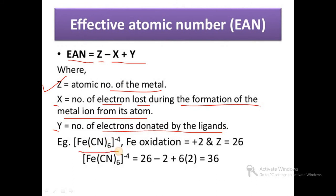For example, in [Fe(CN)6]4−, iron shows a +2 oxidation state, because there are 6 CN ligands and outside the square bracket there is a −4 charge. The atomic number of iron is 26. So the EAN equation becomes: 26 − 2 + (6 × 2) = 26 − 2 + 12 = 36, which is the atomic number of krypton, a noble gas. So this complex satisfactorily obeys the effective atomic number rule.